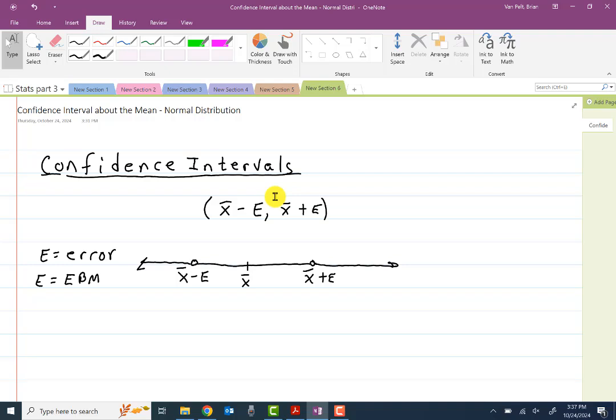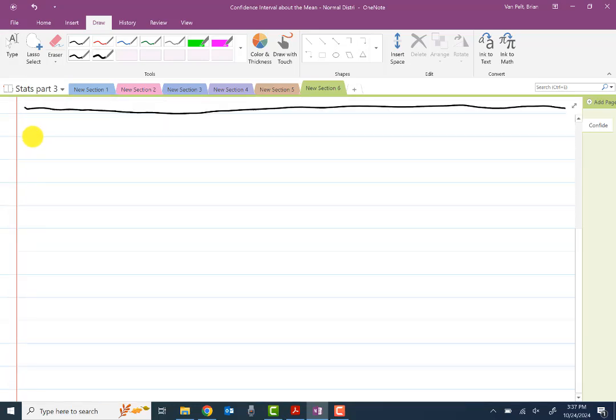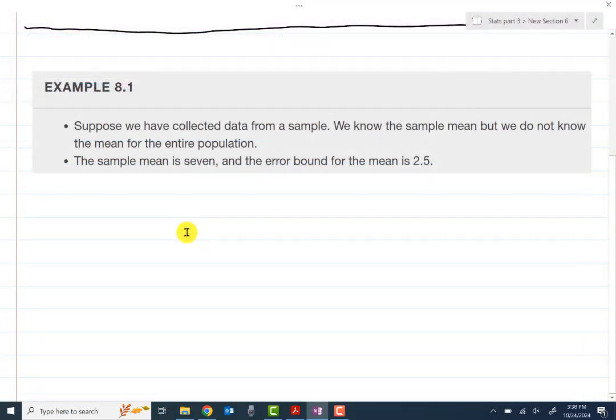So let's start off with an easy example. We've collected some data. We've taken a sample. We know the sample mean, but we do not know the mean for the entire population. So we know the sample mean, which is here. That's always something you can get. And the sample mean will be used as a basis for us trying to estimate the mean itself.